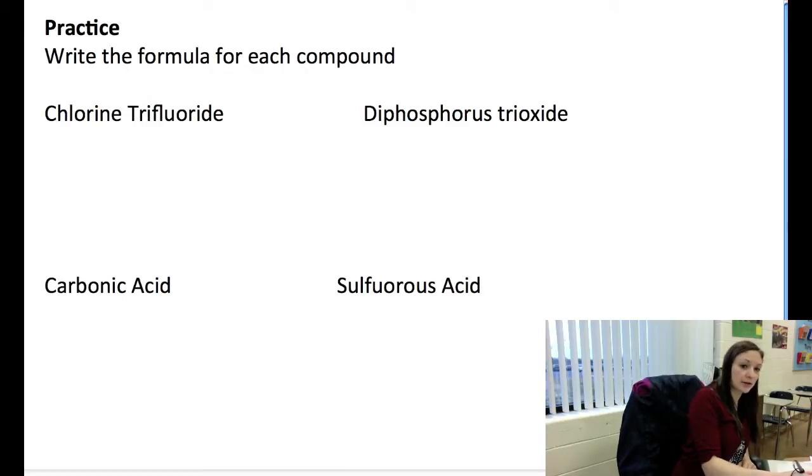So let's go ahead and write these formulas. I have chlorine trifluoride. Two non-metals, got a covalent bond. I just write what it is. Cl, because there's one, trifluoride, F3. ClF3. Diphosphorus trioxide, again, covalent bond. P, di is two, tri is going to be three. Oxide is O.